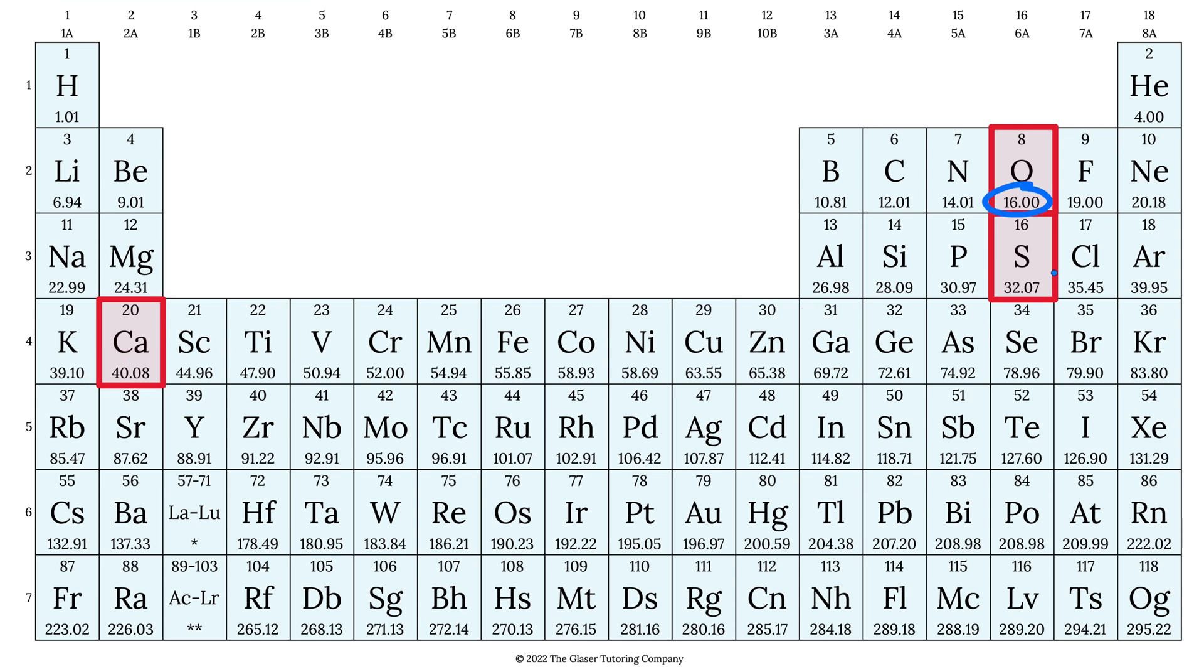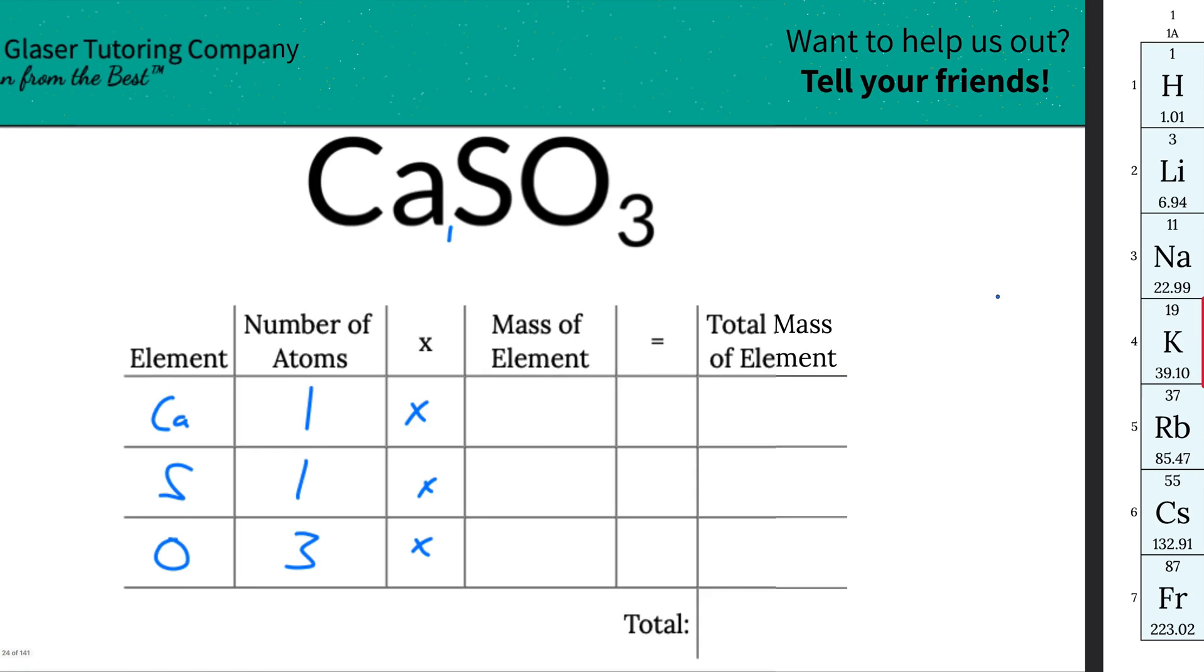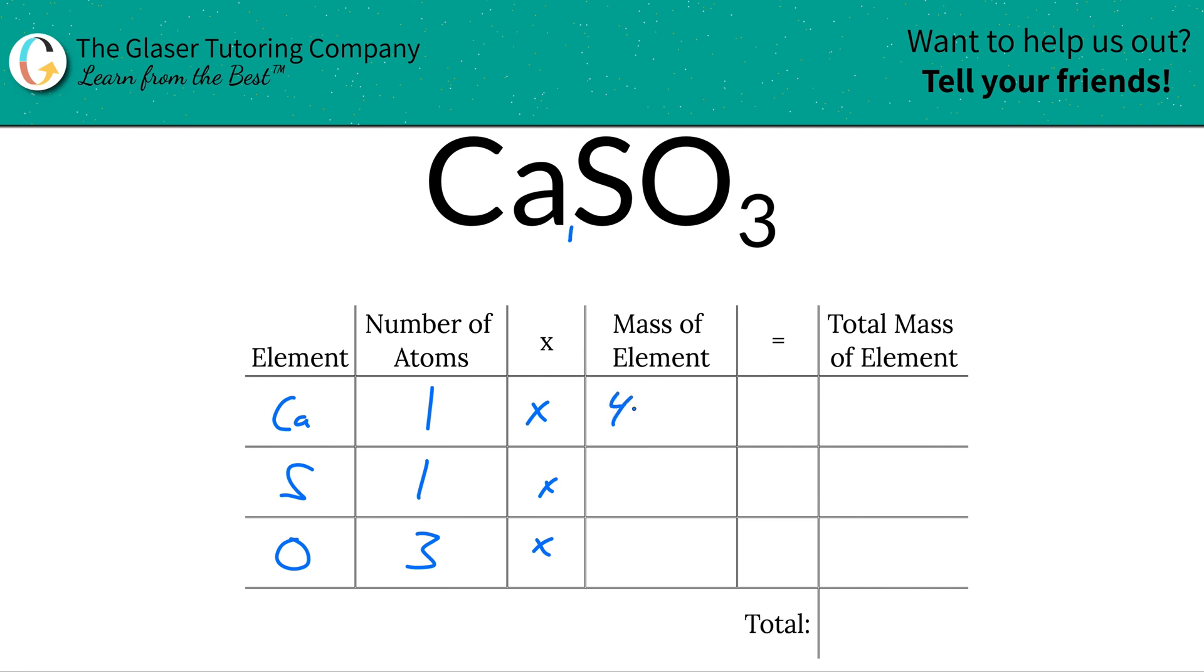Here's calcium, 40.08. Oxygen is 16. Sulfur is about 32.07. So let's write them in. So calcium is 40.08. Sulfur was 32.07. And oxygen here was 16.